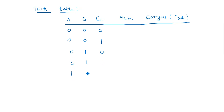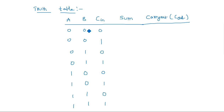With three inputs we have 8 combinations — 2 to the power 3. The input combinations are: 0,0,0 then 0,0,1 then 0,1,0 then 0,1,1 then 1,0,0 then 1,0,1 then 1,1,0 then 1,1,1. For 0+0+0: Sum=0, Carry=0. For 0+0+1: Sum=1, Carry=0. For 0+1+0: Sum=1, Carry=0.